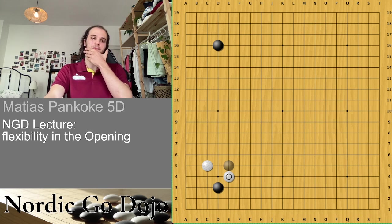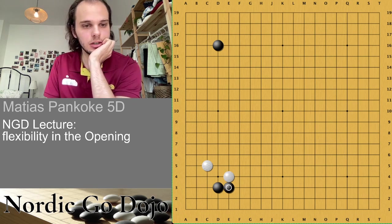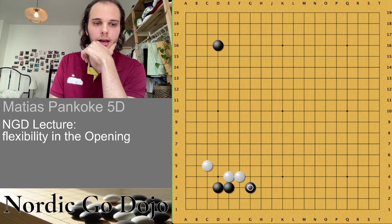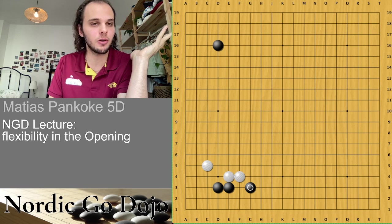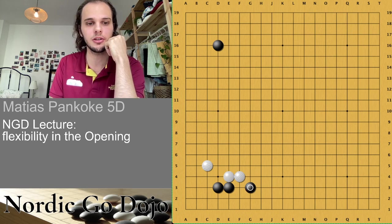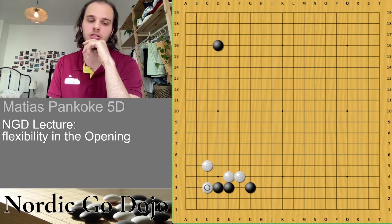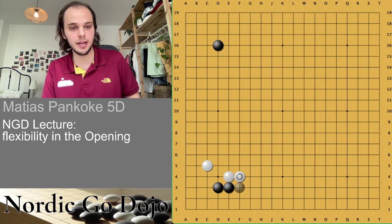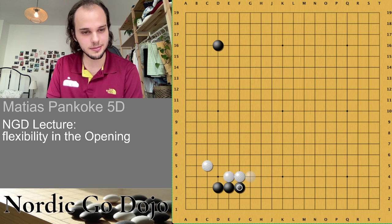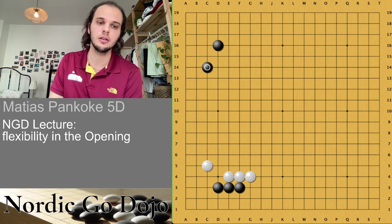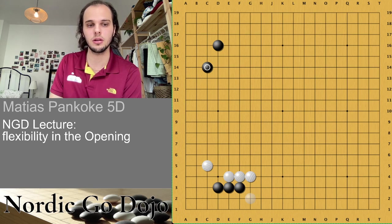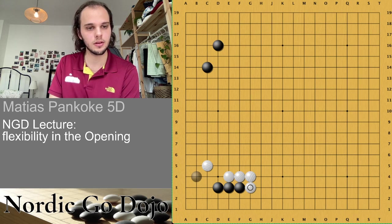Many of you have seen this kind of position come up, and very often we see this result which is basically gote for black. It's just normal, but as white I often feel very flexible now because I can choose whether to attack from here, take cash in the corner, and so on. What black can also do — and I have seen it and done it — is push once and then tenuki. Black accepts the locally worse result to get another move. If black blocks here, then white can keima; if white answers, you can tenuki one more time.